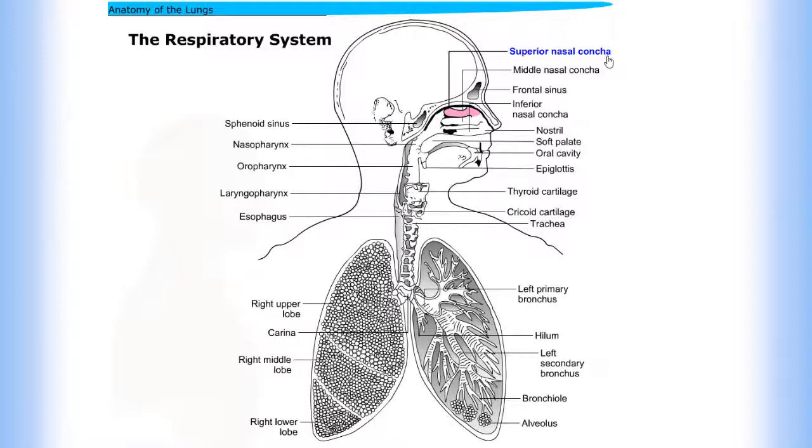Superior nasal conchae, middle nasal conchae, frontal sinus, inferior nasal conchae, nostril, soft palate, oral cavity, epiglottis, thyroid cartilage, cricoid cartilage, trachea, sphenoid sinus.